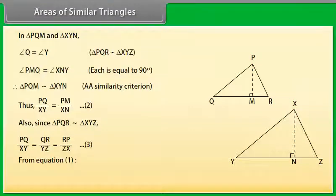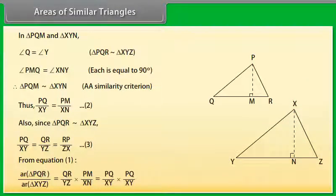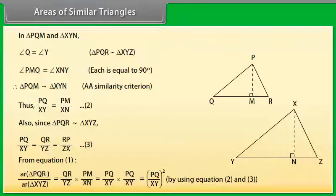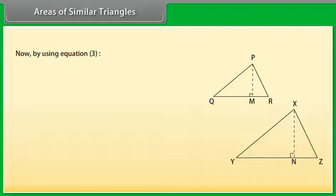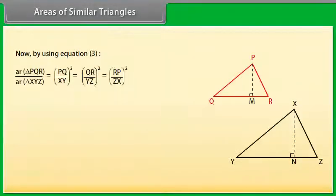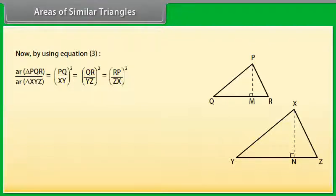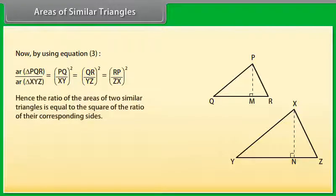From equation 1, using equations 2 and 3, area of triangle PQR upon area of triangle XYZ equals PQ upon XY whole square. By using equation 3, this equals QR upon YZ whole square, which is equal to RP upon ZX whole square. Hence, the ratio of the areas of two similar triangles is equal to the square of the ratio of their corresponding sides.